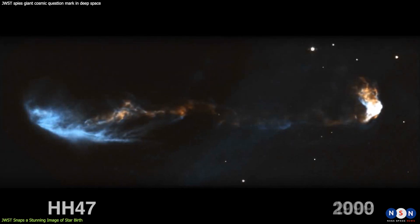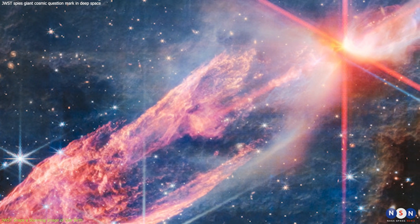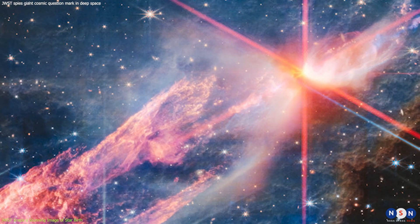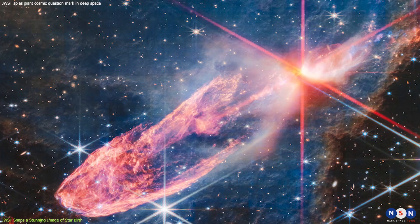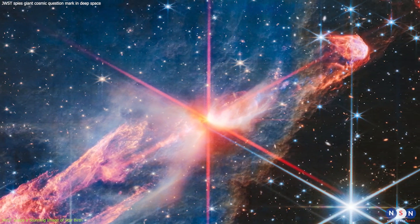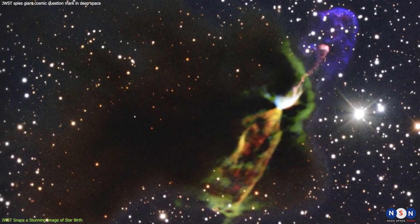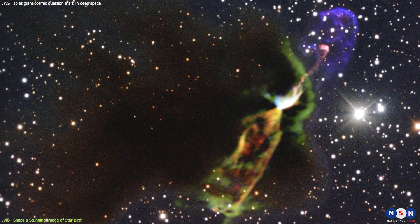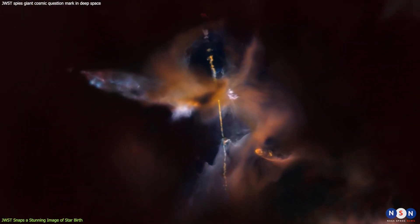The image also shows how the jets from the young stars change direction over time, creating a zig-zag pattern in the nebulosity. This is because the young stars are not isolated, but part of a binary or multiple star system. As they orbit each other, their jets are deflected by their mutual gravitational pull. Herbig-Haro objects are very short-lived phenomena, lasting only a few tens of thousands of years. That may sound like a long time to us, but it is a blink of an eye in cosmic terms.